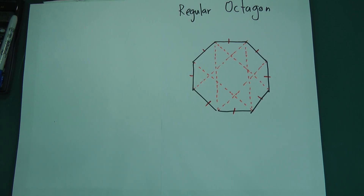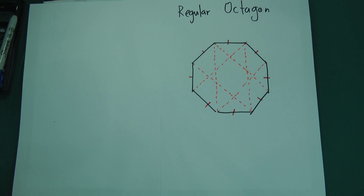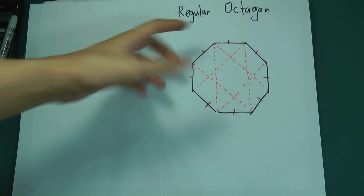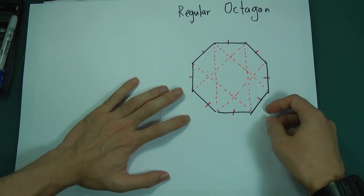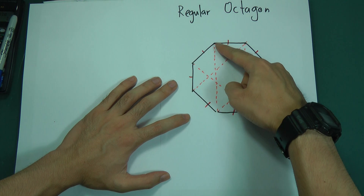On this video, I'm going to talk about the regular octagon with vectors. In order to solve a vector question related to the regular octagon, it's very important for you to know the lengths in between.